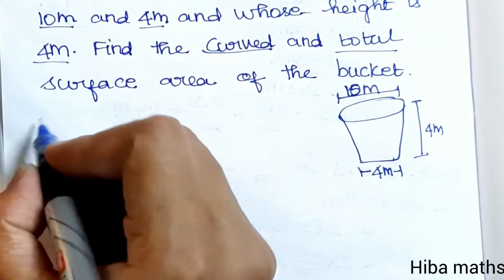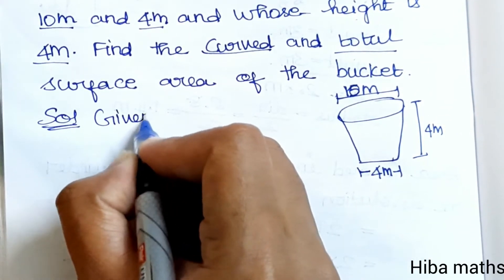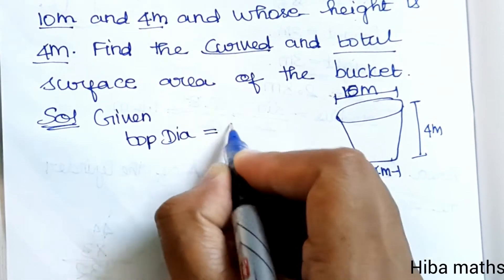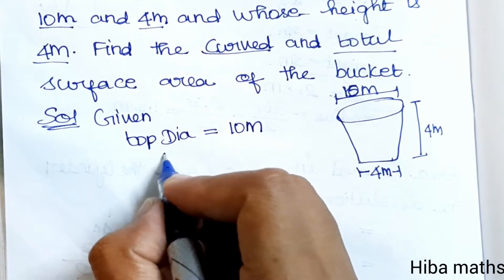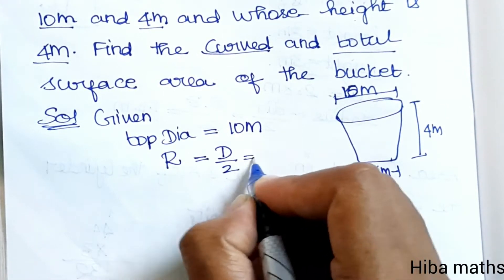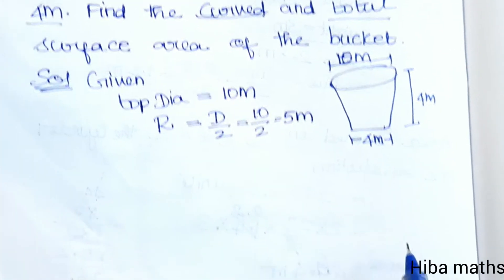Solution: Given top diameter is 10 meter. Top radius capital R is diameter divided by 2, so 10 divided by 2 equals 5 meter.